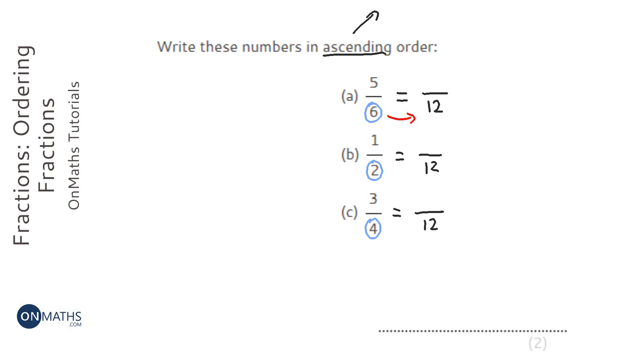How do I get from 6 to 12? I times by 2, so I'm going to do the same to the top, times that by 2, and I get 10. On this next one, what do I do to 2 to get to 12? Times by 6. I'm going to do the same to the top, times that by 6.